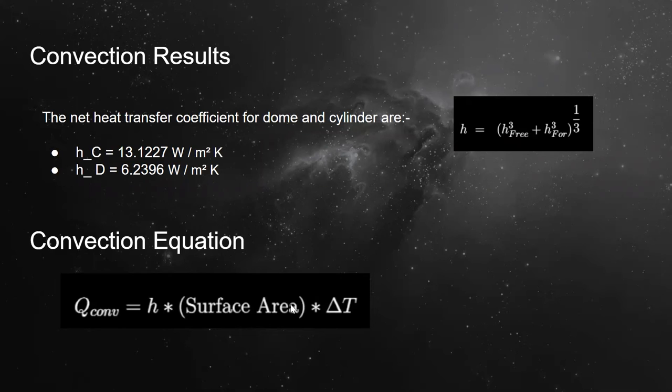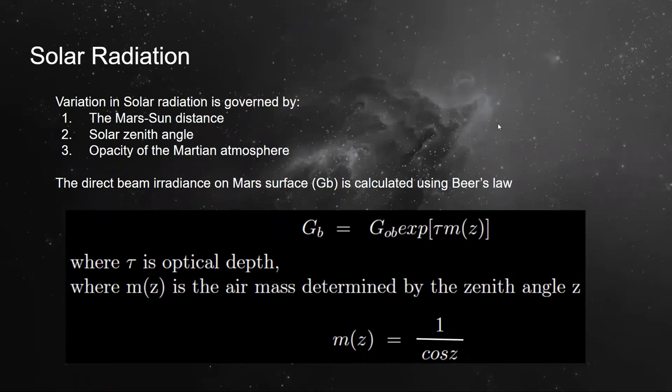The convective heat loss to the environment can be calculated using this correlation. After convection, the next mode of heat transfer is radiation. We have used a paper published by NASA to calculate solar radiation.